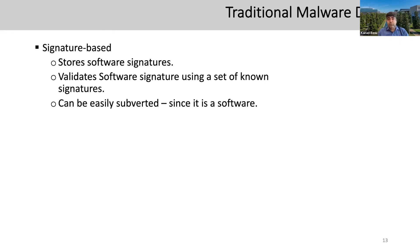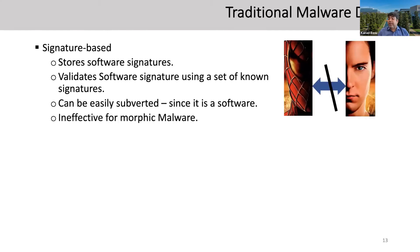Traditionally we have two types of malware detection: signature-based and behavior-based. Signature-based malware detection stores software signatures and validates them against a set of known signatures. Whenever a match with a known malicious signature occurs, it flags the software. For example, the antivirus runs Zoom and PowerPoint — if a software signature matches a known malicious one, it flags it. This can be easily subverted because it's software. Polymorphic malware changes its structure — like Spider-Man and Peter Parker: same person, but different face signatures.